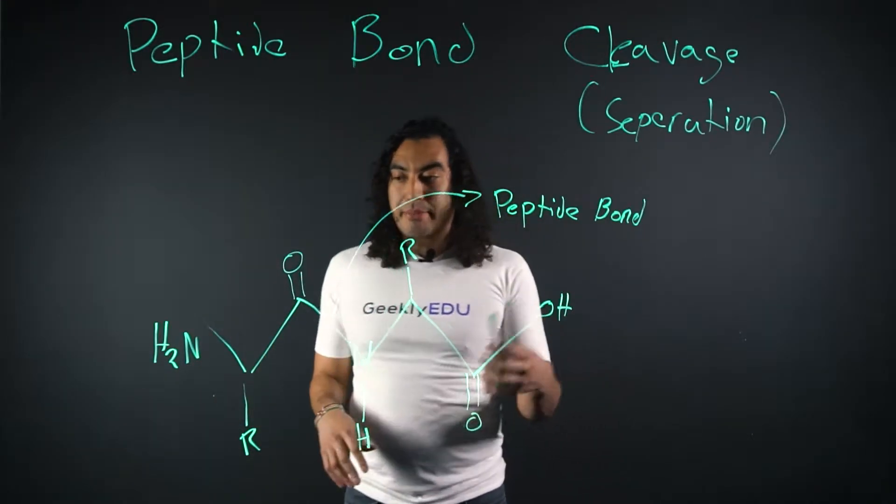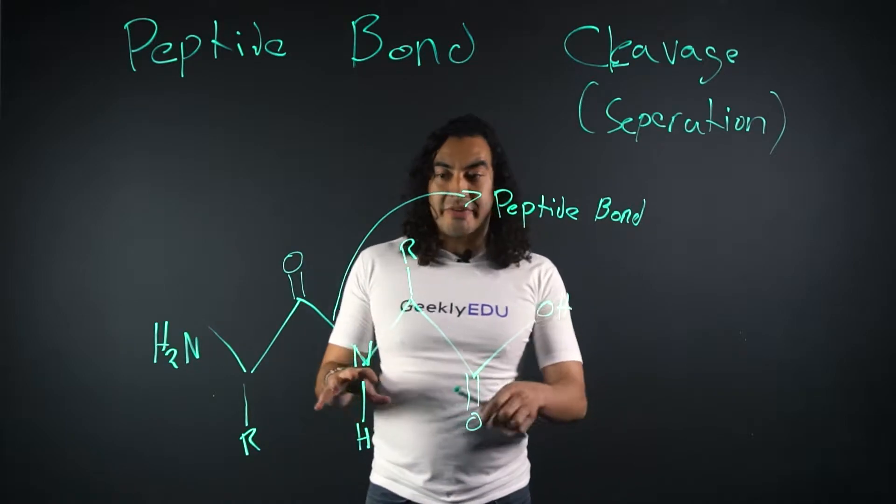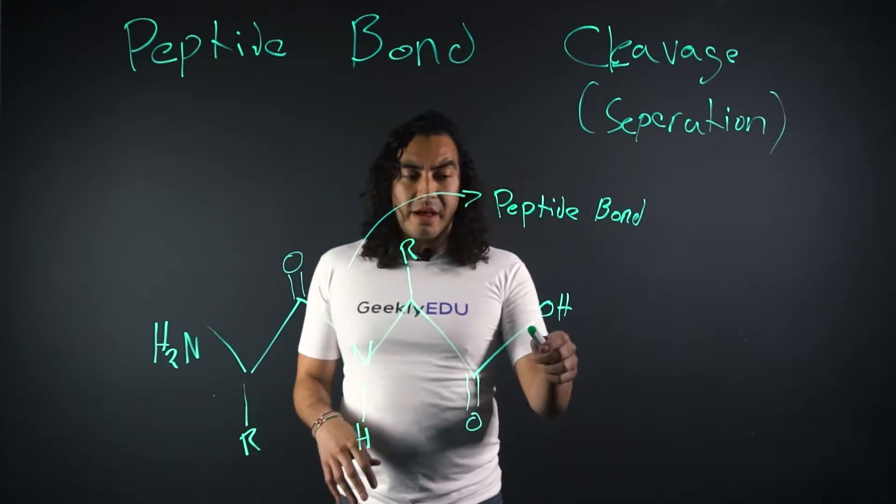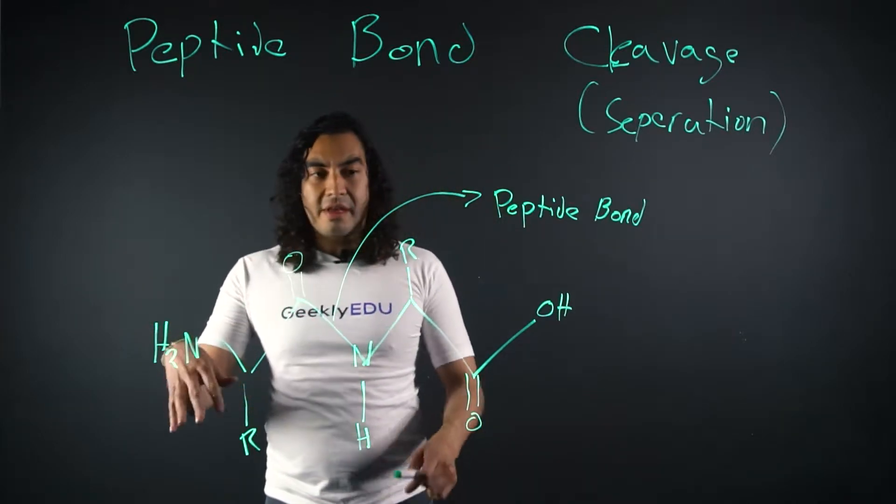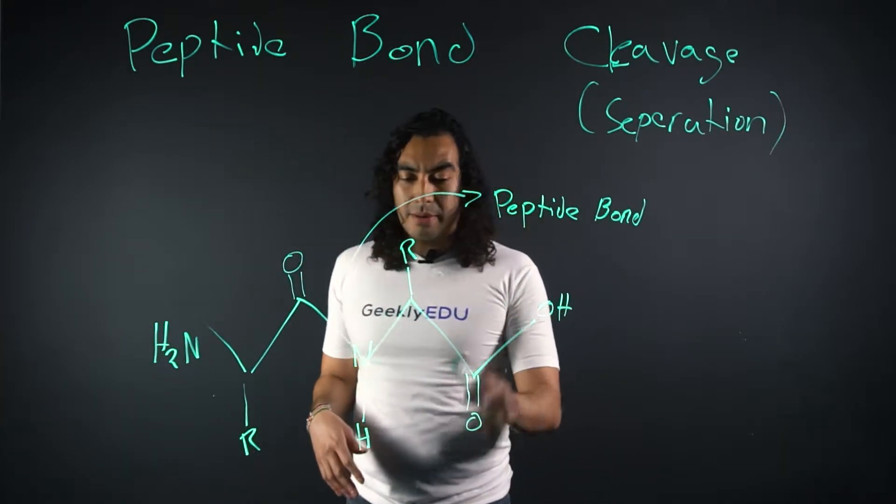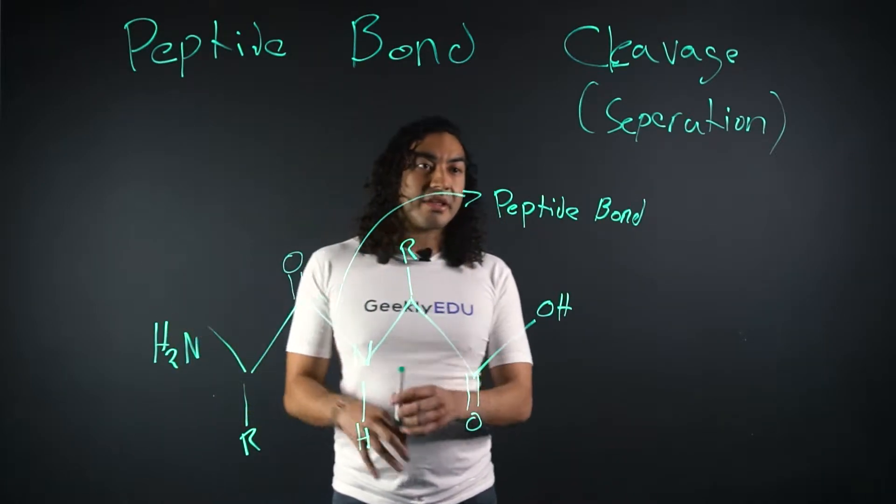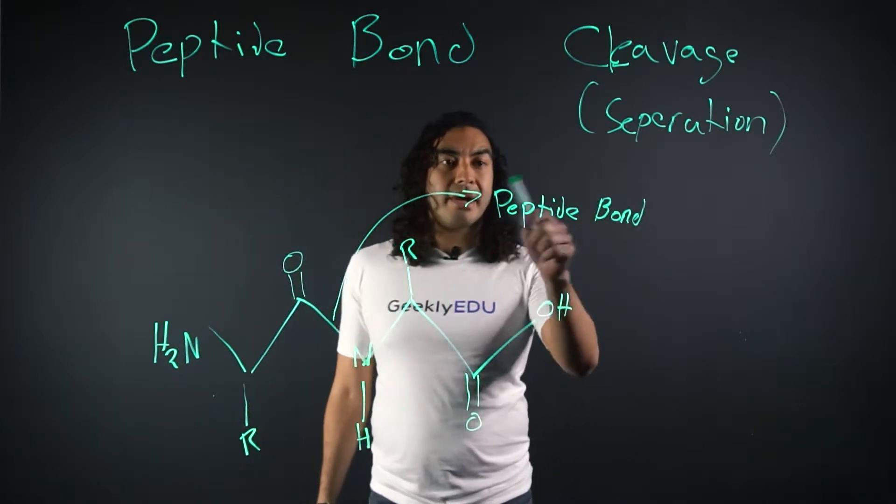So you guys probably remember the dipeptide that we formed in the last video. So here it is again. We have our double mount top backbone with a line here off to the right, line here off to the left, pretty simple. Our OH groups, our double line oxygen, our amino group here, our side chains, got pretty much everything. And remember we got our peptide bond here.